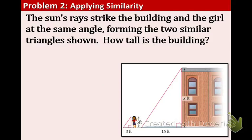In example two, we have this picture, and this is what's happening. The sun's rays strike the building and the girl at the same angle, forming two similar triangles shown. How tall is the building?